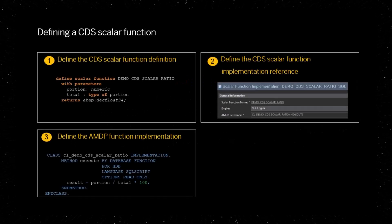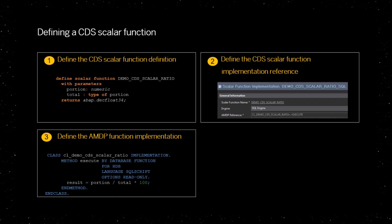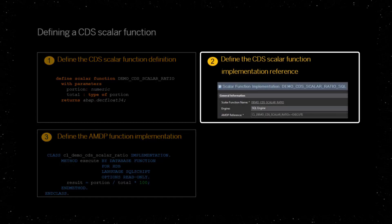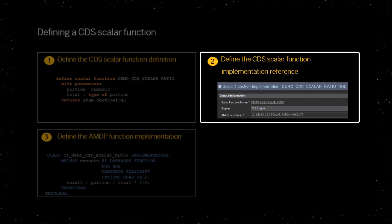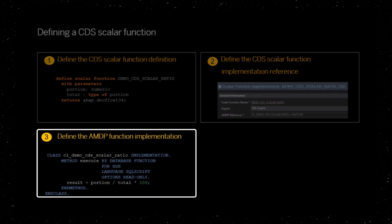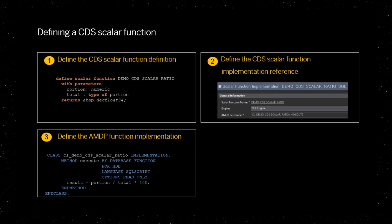A SQL-based Scalar function consists of three repository objects: a Scalar function definition, a Scalar function implementation reference, and an AMDP function implementation. Let's look at them in detail.